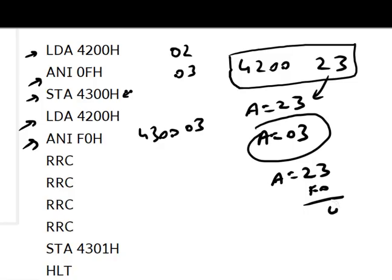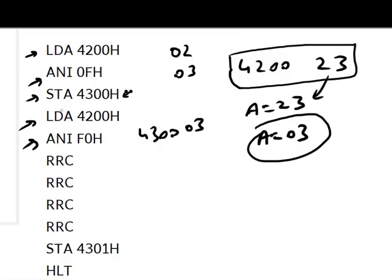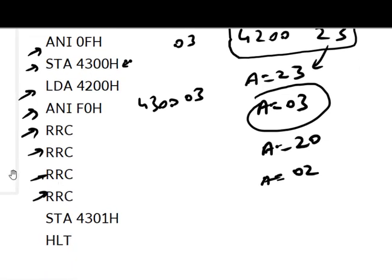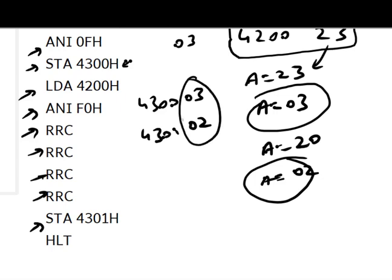With ANI F0, we AND 23 with F0: 3 AND 0 gives 0, and 2 AND F gives 2, so A becomes 20. We now need to convert 20 to 02, so we rotate right four times (RRC × 4). After four right rotations, 20 becomes 02. Then STA 4301 stores 02 into memory location 4301.